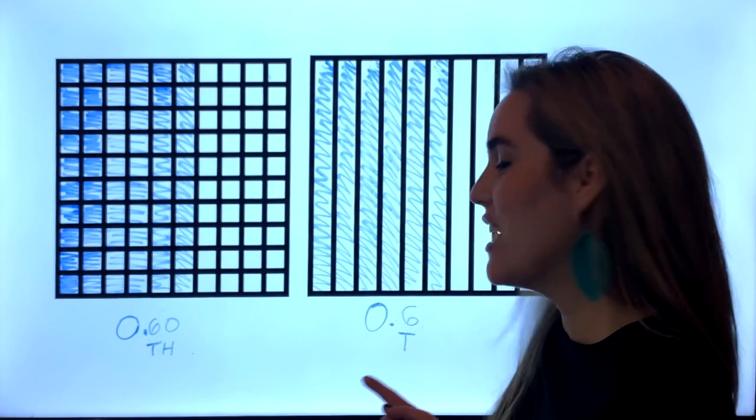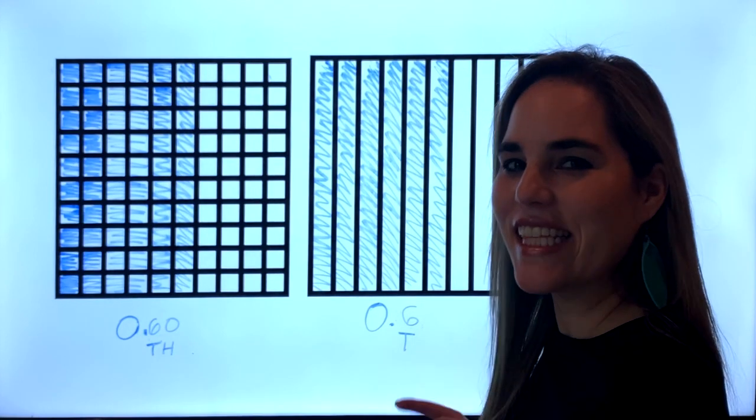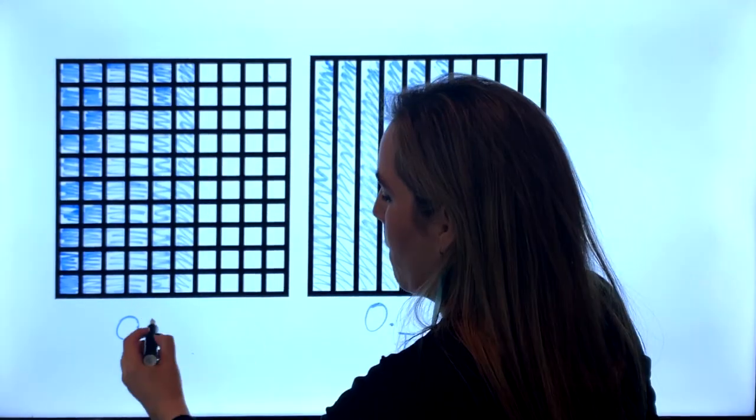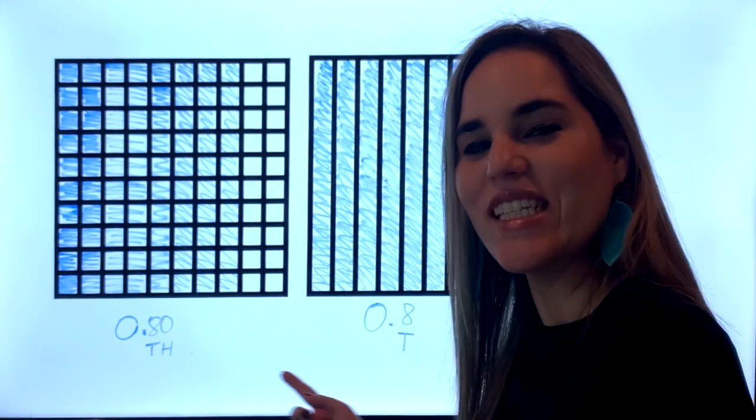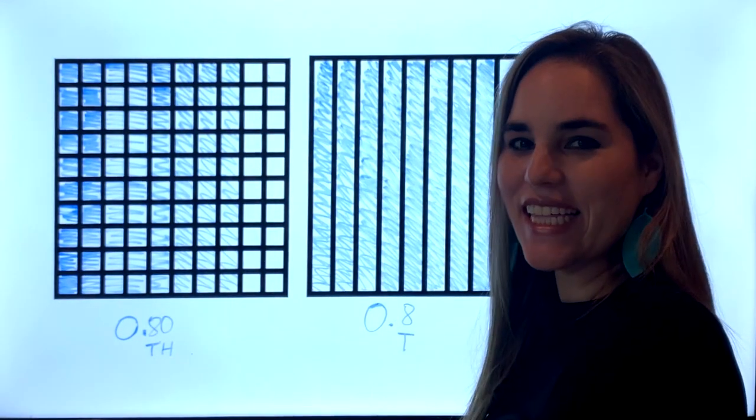Sixty hundredths, sixty hundredths is equivalent to six tenths. Eighty hundredths is equivalent to eight tenths.